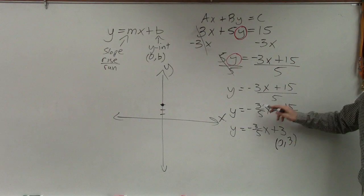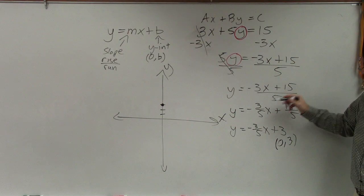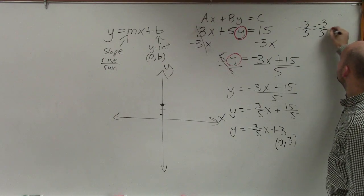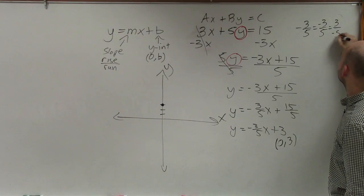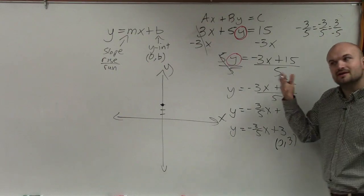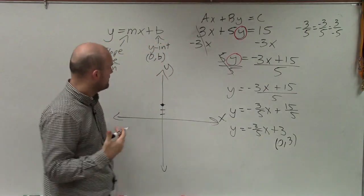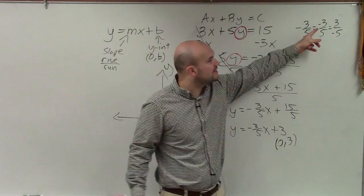Now, the slope is negative 3 fifths. So again, negative 3 fifths can be written as negative 3 over 5 or 3 over negative 5. It doesn't matter which one. It just cannot be negative 3 over negative 5 because that would be a positive 3 fifths. So I'm going to use this as my slope.